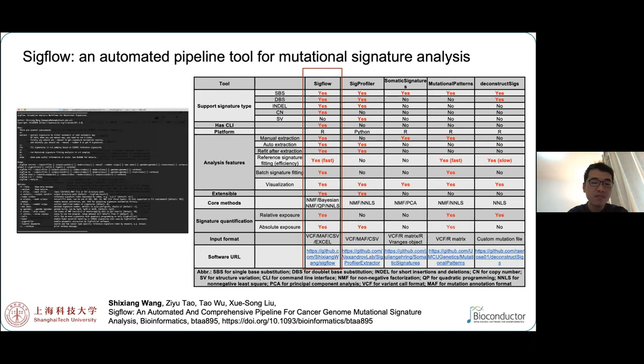As Mutational Signature Analysis is becoming a routine step after somatic variant calling, I developed a command-line interface program called SIGFLOW. SIGFLOW offers multiple workflows to analyze Mutational Signatures and outputs a range of data and results. This table shows features supported by SIGFLOW and its comparison to several available tools, such as SigProfiler and MutationalPatterns.